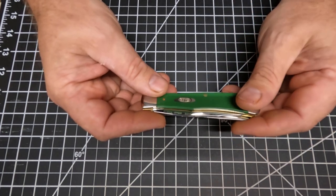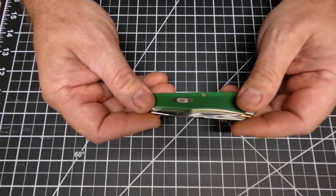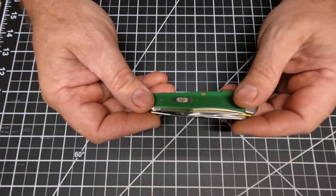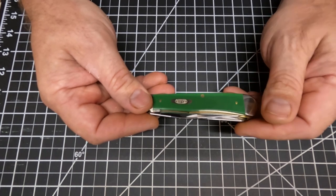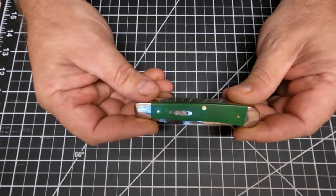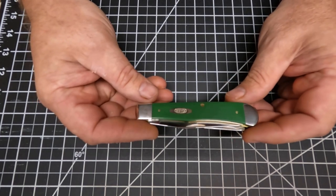I looked at Bear and Son trapper knife and looked at Hen and Rooster and one or two more there, and I looked at this case and I settled in on the case knife because it was a good deal.